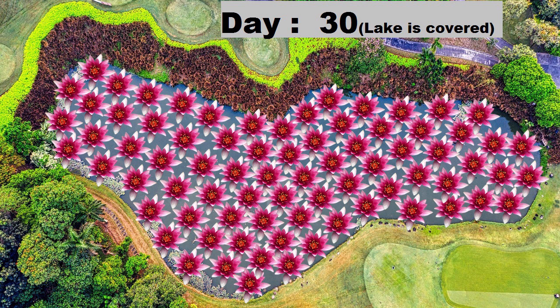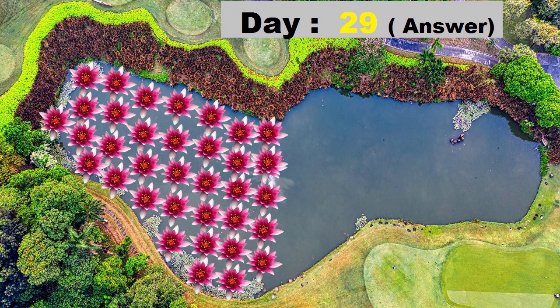That means on the 30th day, the pond is full of water lilies, and exactly on the 29th day, it's halfway filled. That's why the correct answer is 29.